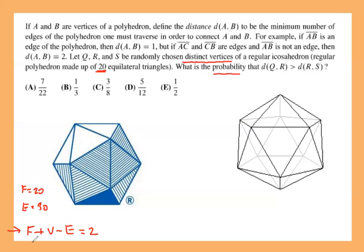We have 20 faces and 30 edges. Using Euler's formula: 20 + vertices − 30 = 2, so the number of vertices is 12. We don't really need this for the problem, but it's important to remember and can help confirm our counting. So we have 12 vertices on the icosahedron.